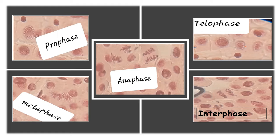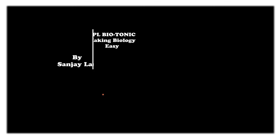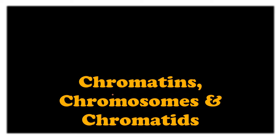Many students were asking me for more clarification about the different forms of genetic material — that is, chromatin, chromosomes and chromatids. Welcome to one more video of Special Biotonic. Today we will be focusing on chromatin, chromosomes and chromatids.